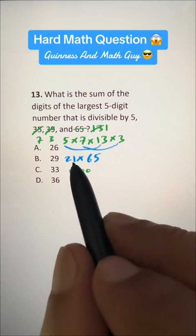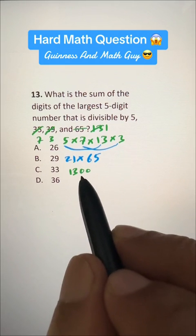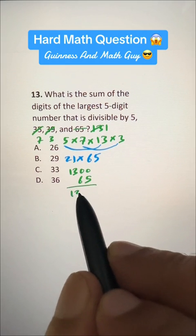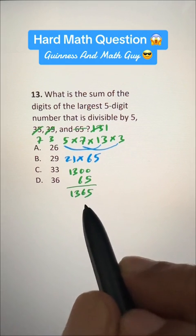and we have another 0. And 1 times 65 is 65. So 1365 we have.